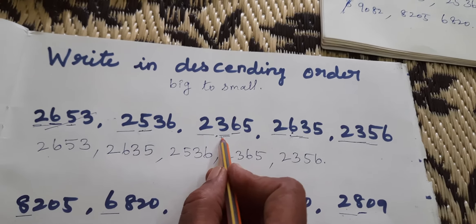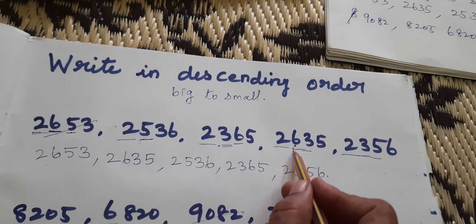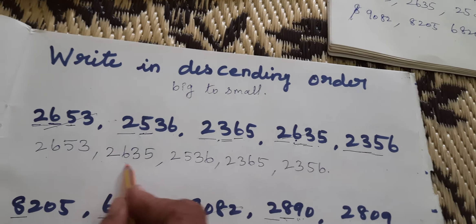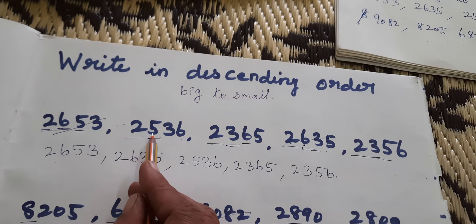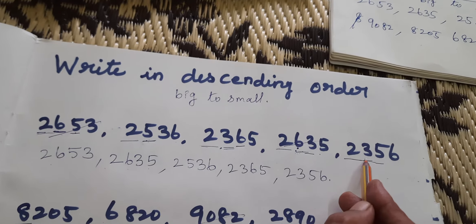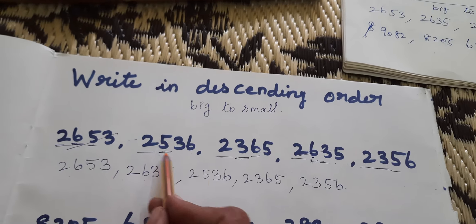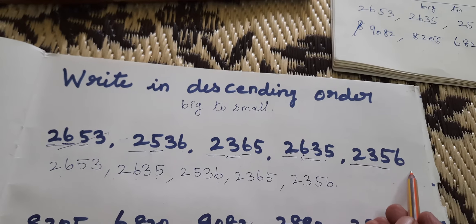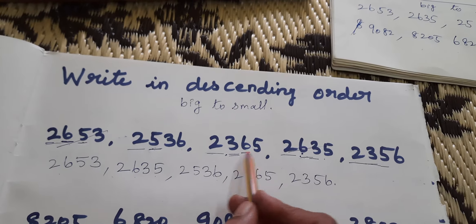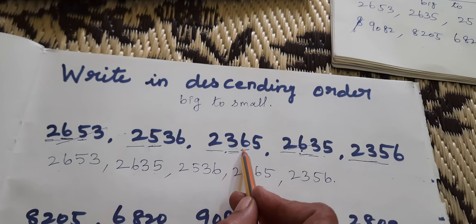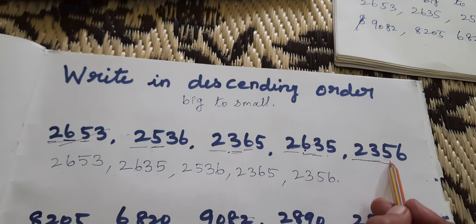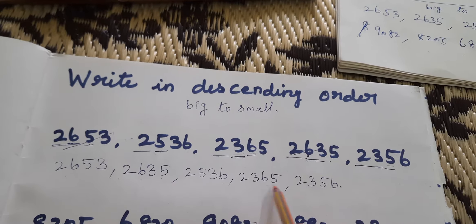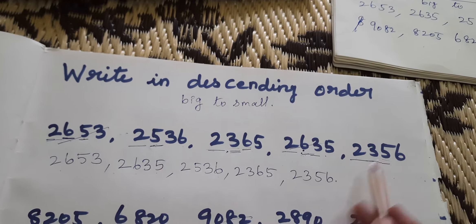Then, comparing the remaining hundreds: 500, 300, 600 is used, 300. Which one is the biggest? 500. So, 2536. Then comparing 2356 and 2365 — both have 300 in hundreds, so check the tens place: 60 vs 50. 60 is bigger. So, 2365. Last one: 2356.